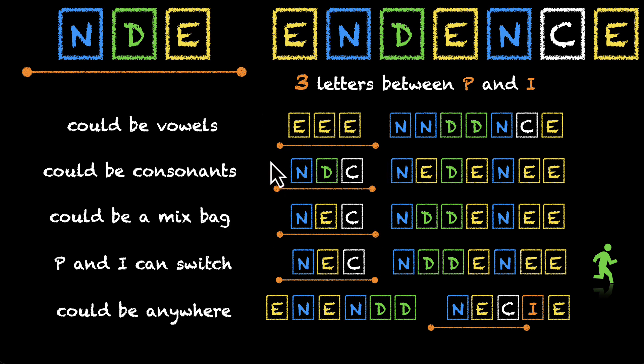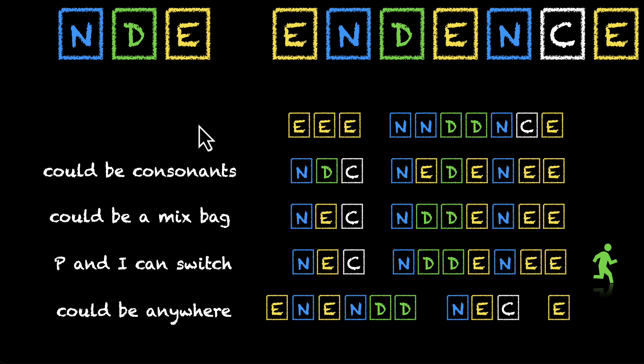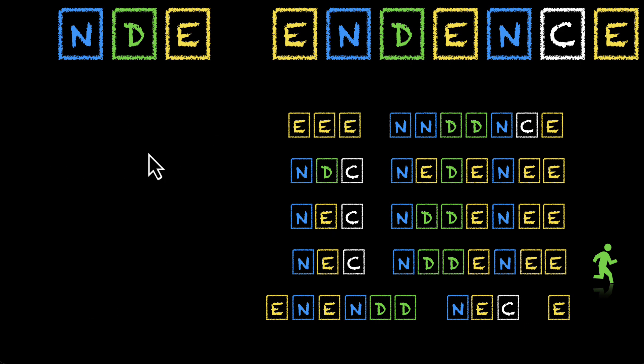When they vanish, this constraint, 3 letters between P and I also vanishes with them. If we don't have P and I, how can we have letters between P and I? And with this constraint, all the scenarios, all the cases go away. This is how the world looks like when P and I don't exist. So we had a problem and we imagined it away.